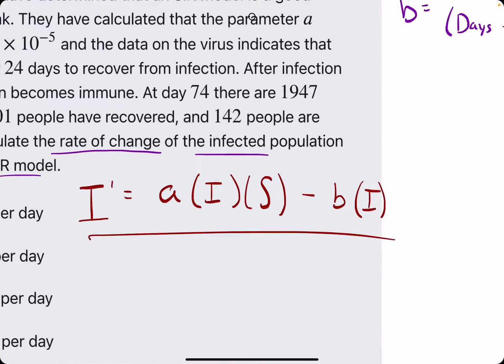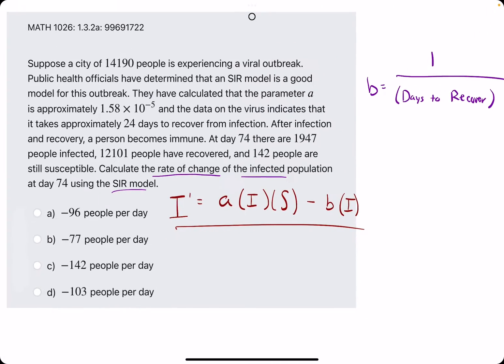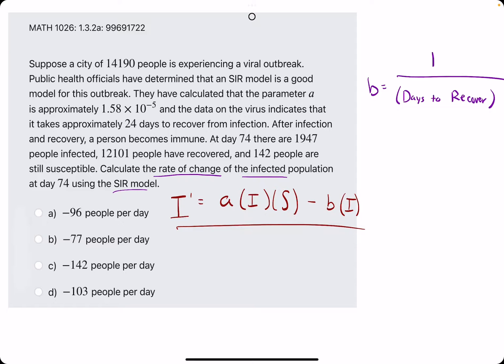So from the SIR model, we are using I prime, which represents the rate of change of the infected, I prime.